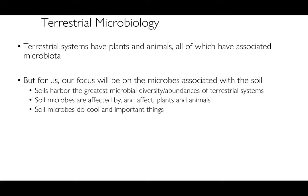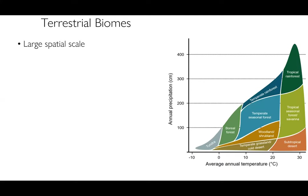We're going to start big and think about soils at a larger spatial scale. Here we have many different types of terrestrial biomes, ranging from tundra at the very cold end to tropical rainforest at the warm end. This graph depicts how much rain each biome gets as a function of annual temperature. There's a pretty strong correlation: colder places get less rain, and warmer places get more rain.